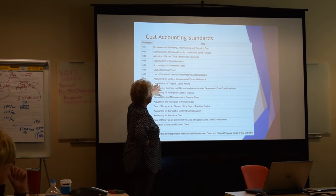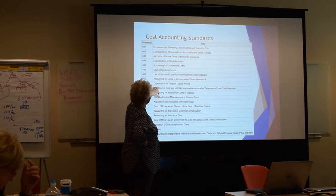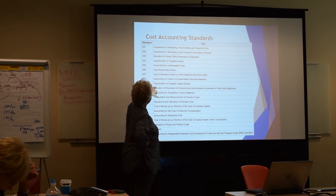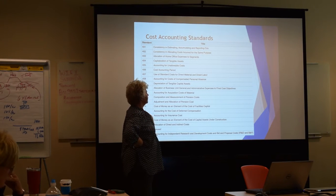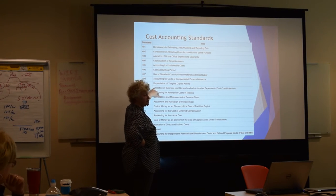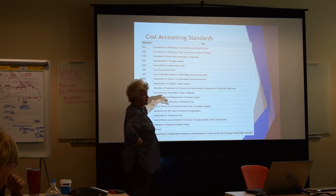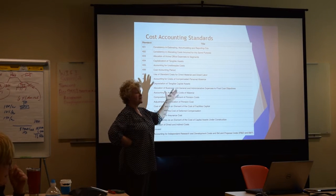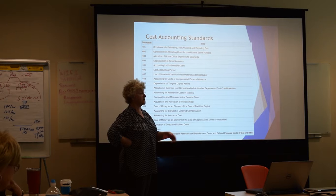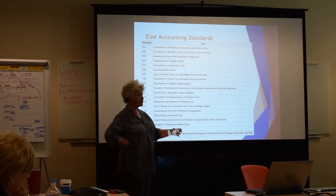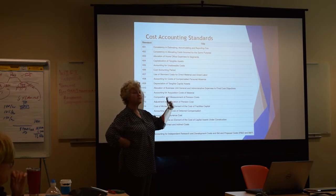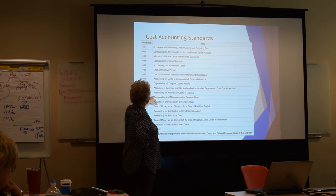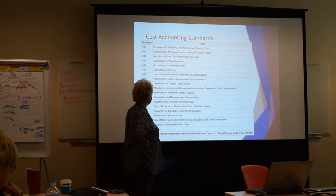Accounting for compensated personal absence — how do you account for that? Depreciation of tangible capital assets — this covers depreciation and capitalization. Allocation of business unit general and administrative costs to the final cost objective — these are your G&A rates. How are you doing those? Accounting for acquisition costs of materials: not only do you have the cost of the materials, but someone has to look at all the vendors, figure out what the prices are, evaluate them, keep track of trends, and see changes in price — that's the purchasing function. Composition and measurement of pension costs, and adjustment and allocation of pension costs.